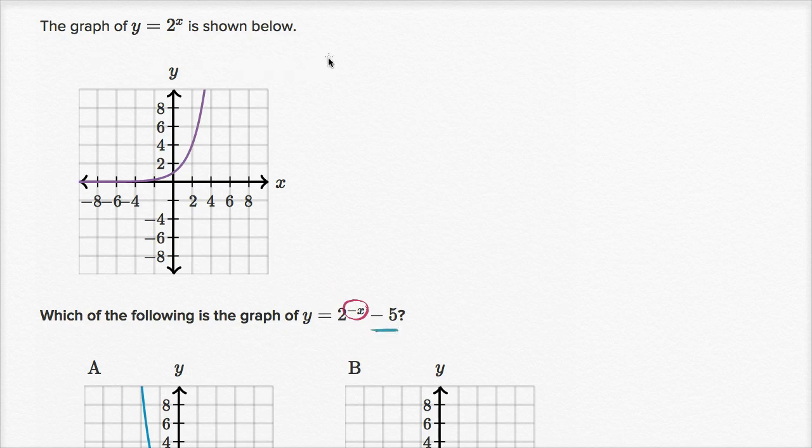So let's first think about what y equals two to the negative x will look like. Well, any input we now put into it, x, we're now going to take the negative of it. So if I input a two, it's like taking the opposite of the two, and then inputting that into two to the x.